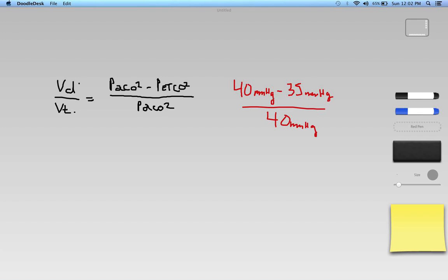Okay, so 40 subtract 35 gives me 5, and then I just have 5 divided by 40. And what I'll do is I will just pick that up right over here. So we have 5 divided by 40. Obviously, this is going to be a fraction.